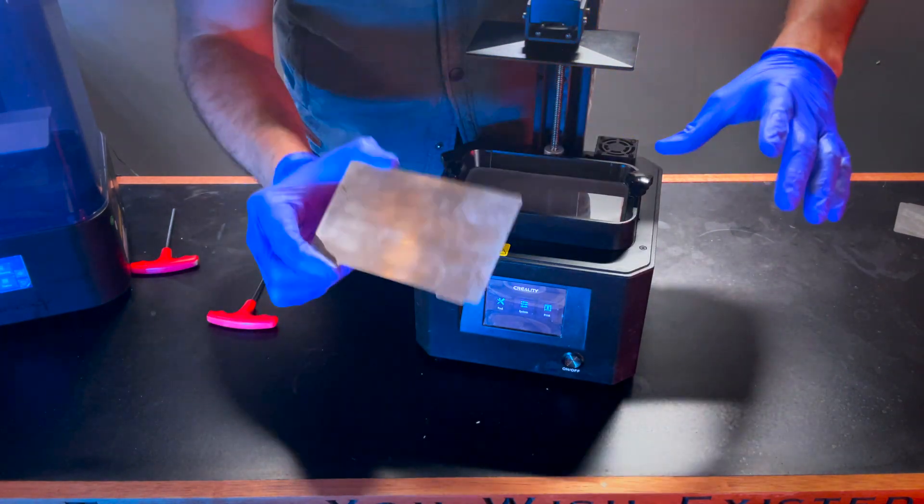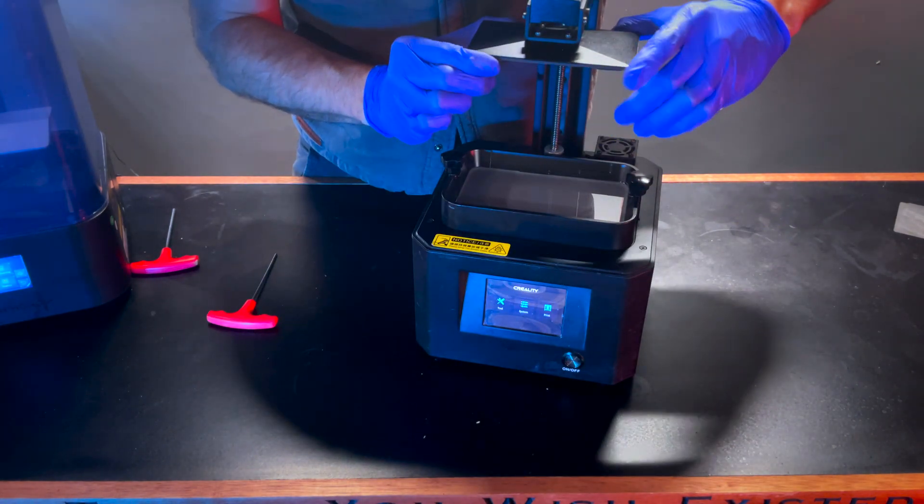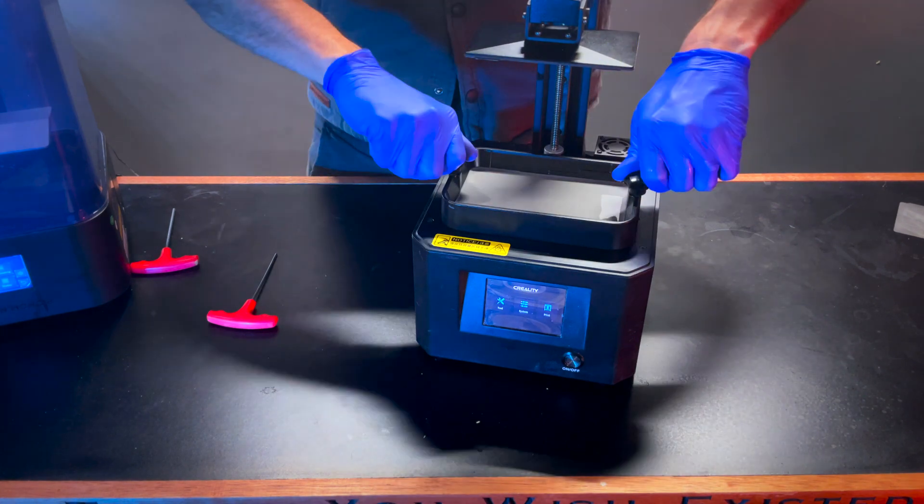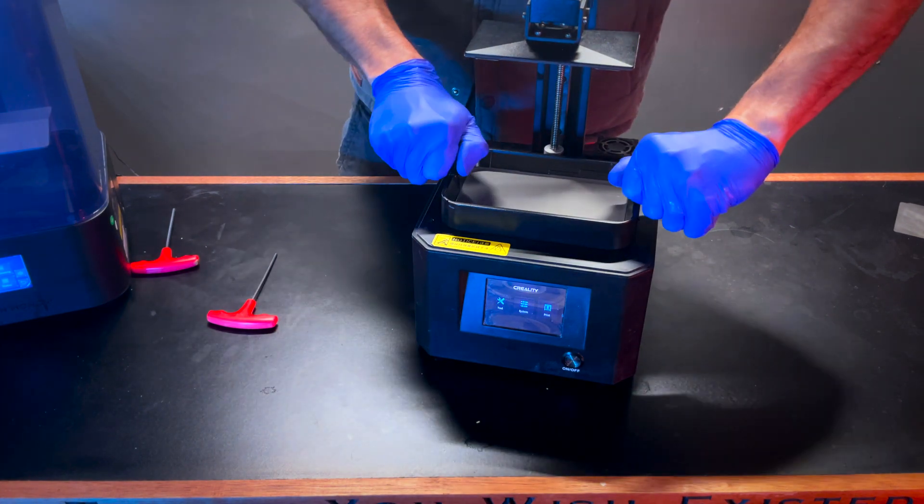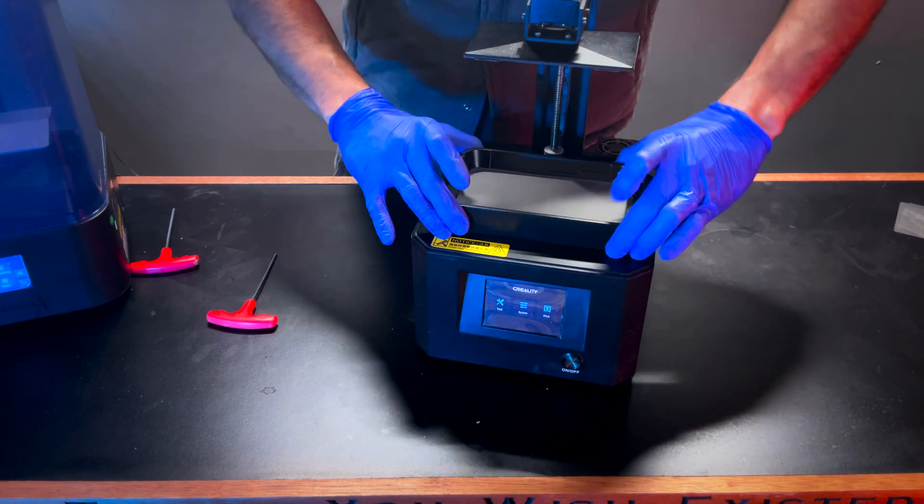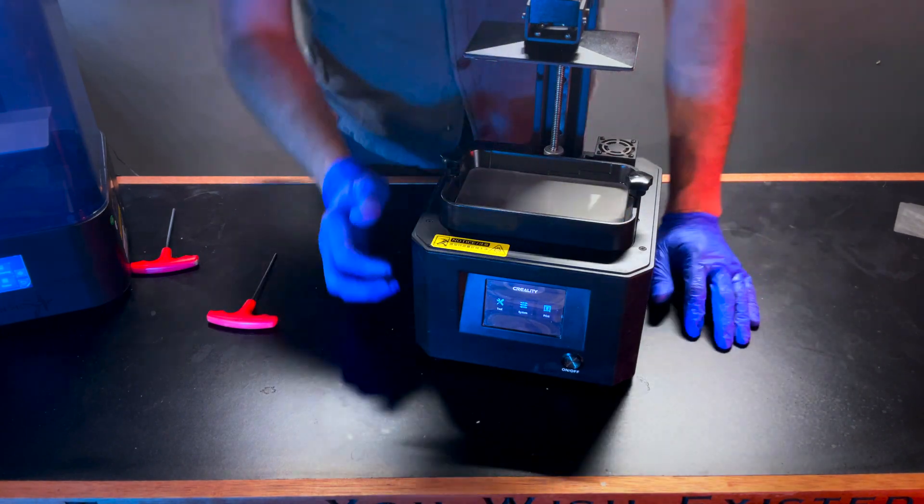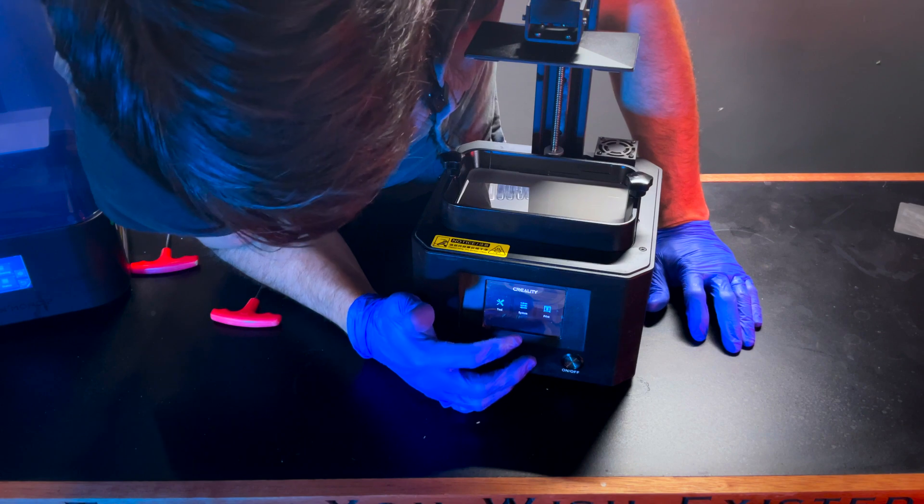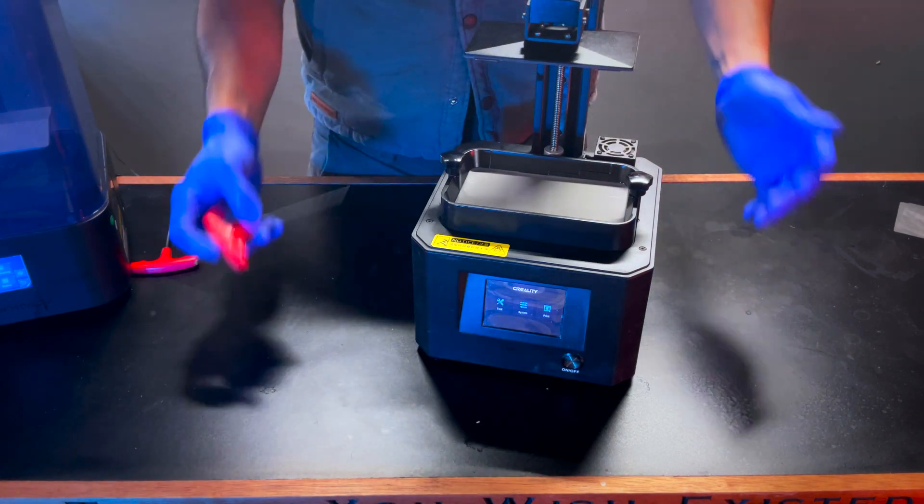If you have any attachments such as a magnetic build plate, those need to be in place. And you need to make sure that your resin vat is secured to your 3D printer. Once you've checked all of those things, it's actually a fairly simple process just like before.